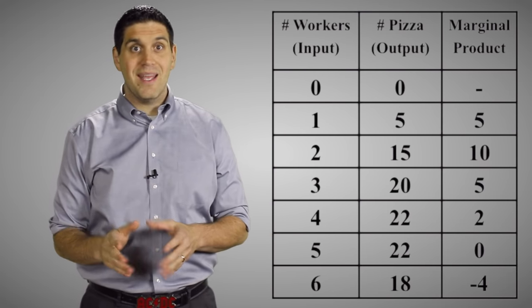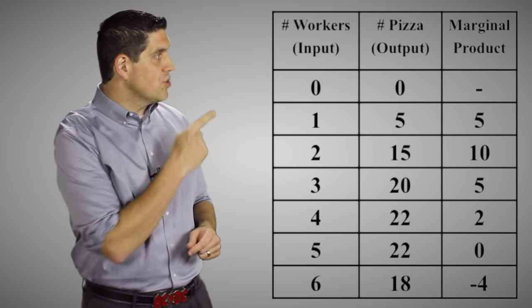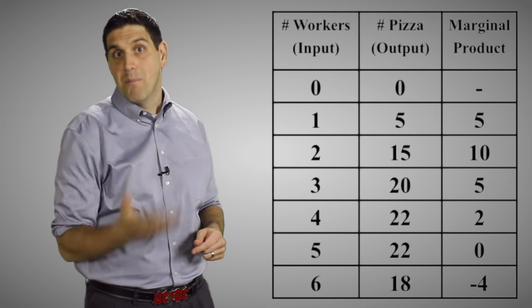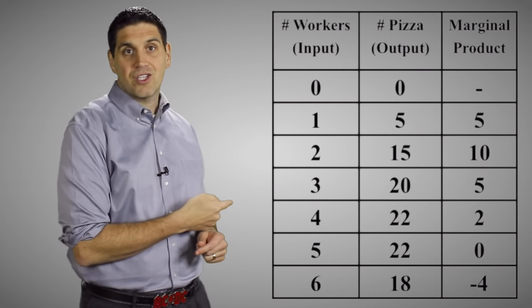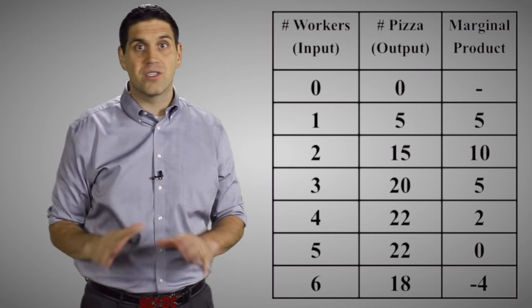It's not the sixth worker. It's the third worker. Notice the marginal product has been falling ever since the third worker. That's diminishing returns. It's not when it actually goes negative. That's negative returns, a completely different concept.